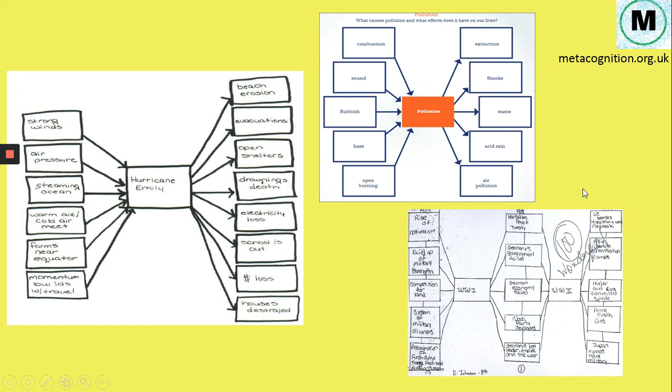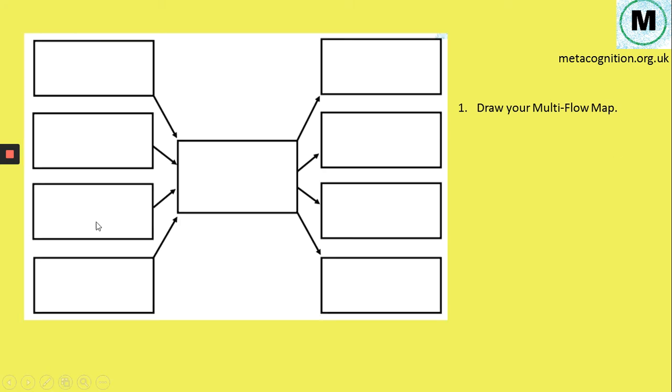So you can see here how different things can all link up and you can get a slightly fancier multi-flow map. So I'm going to go through an example now with you so that you fully understand how you use this. So the first thing you do is you just draw your multi-flow map.